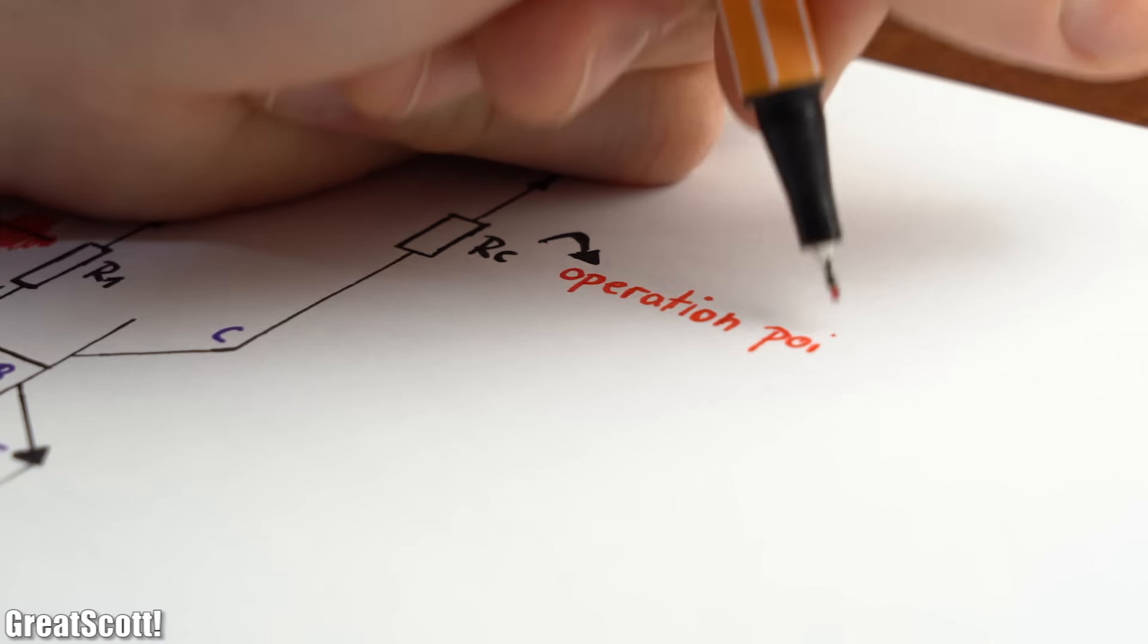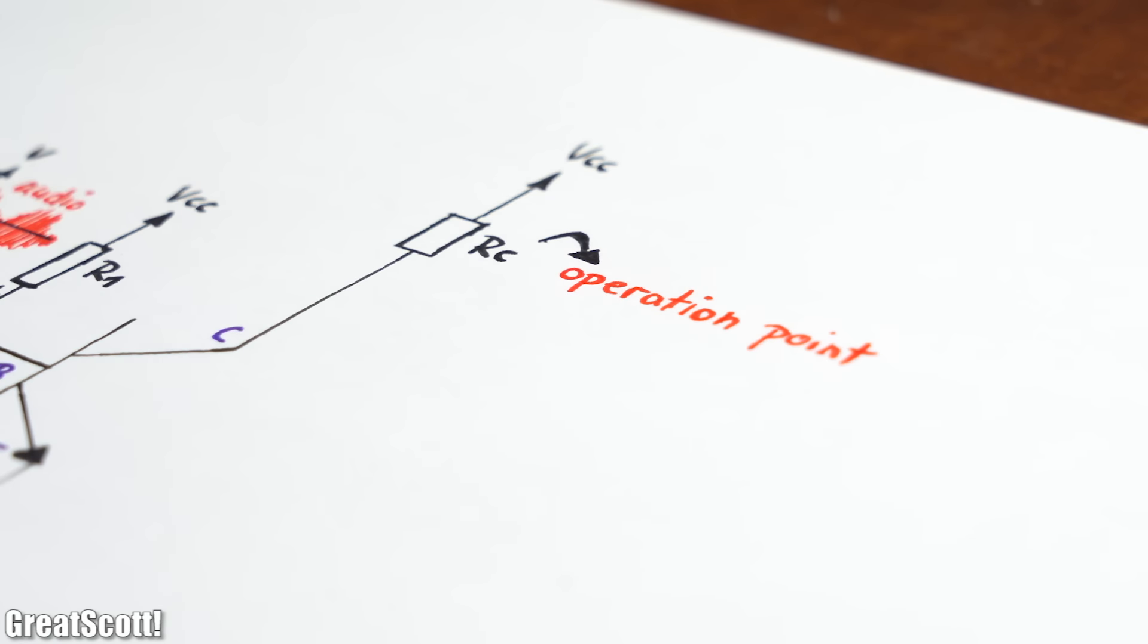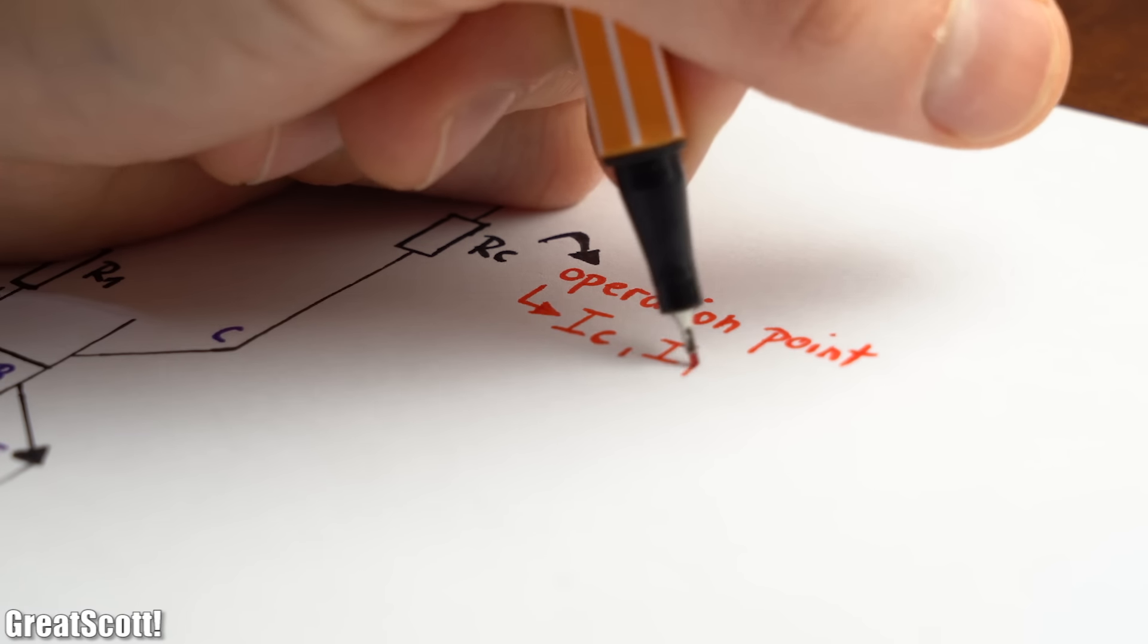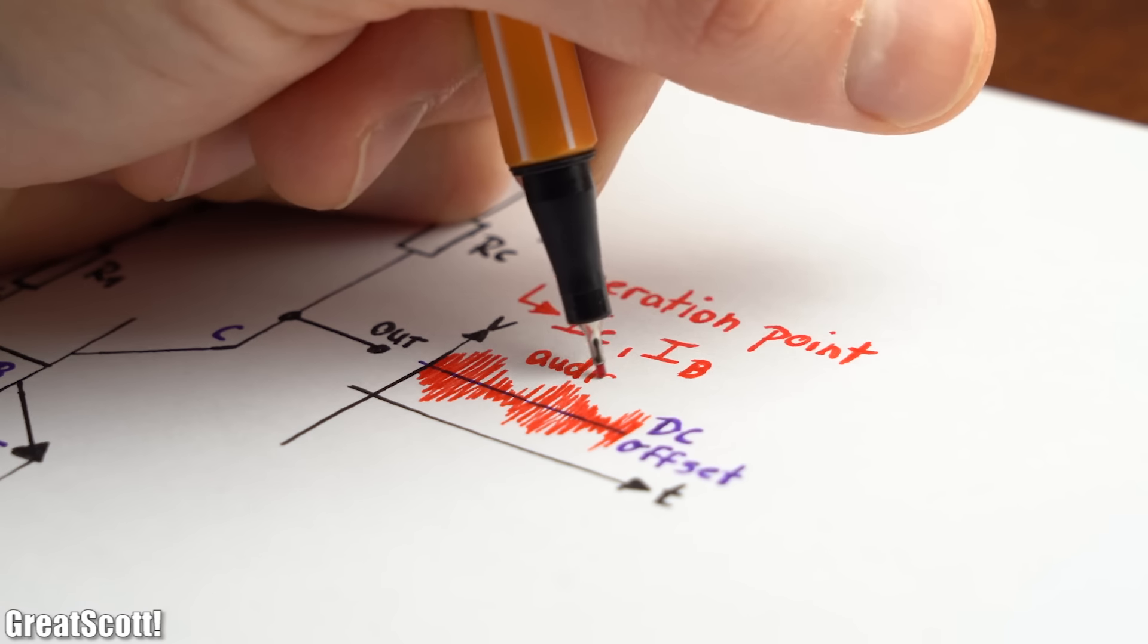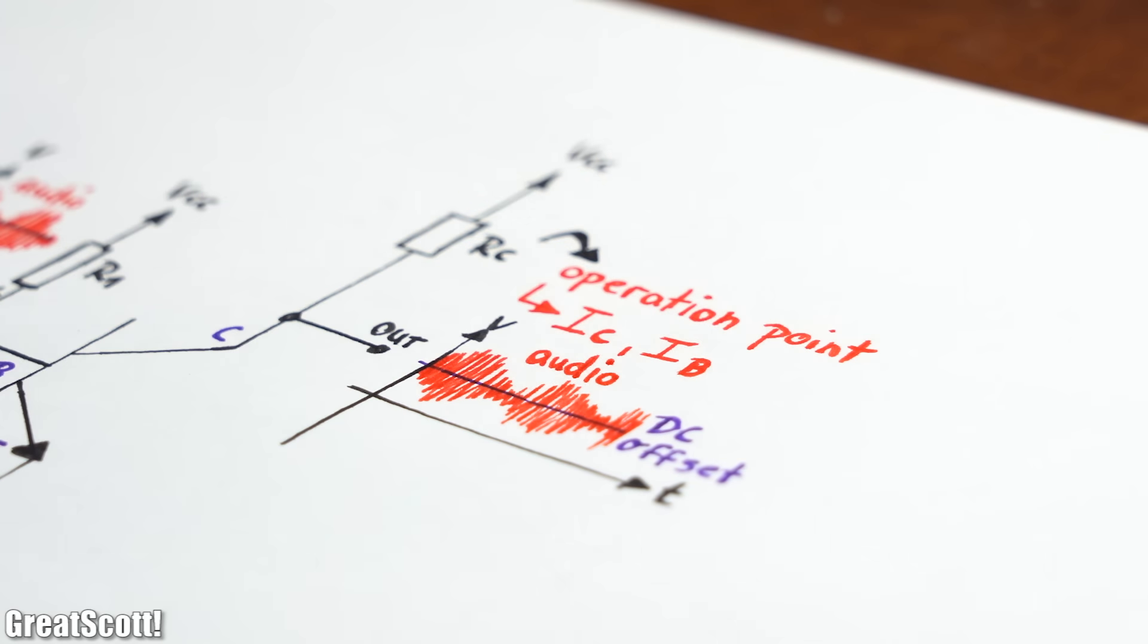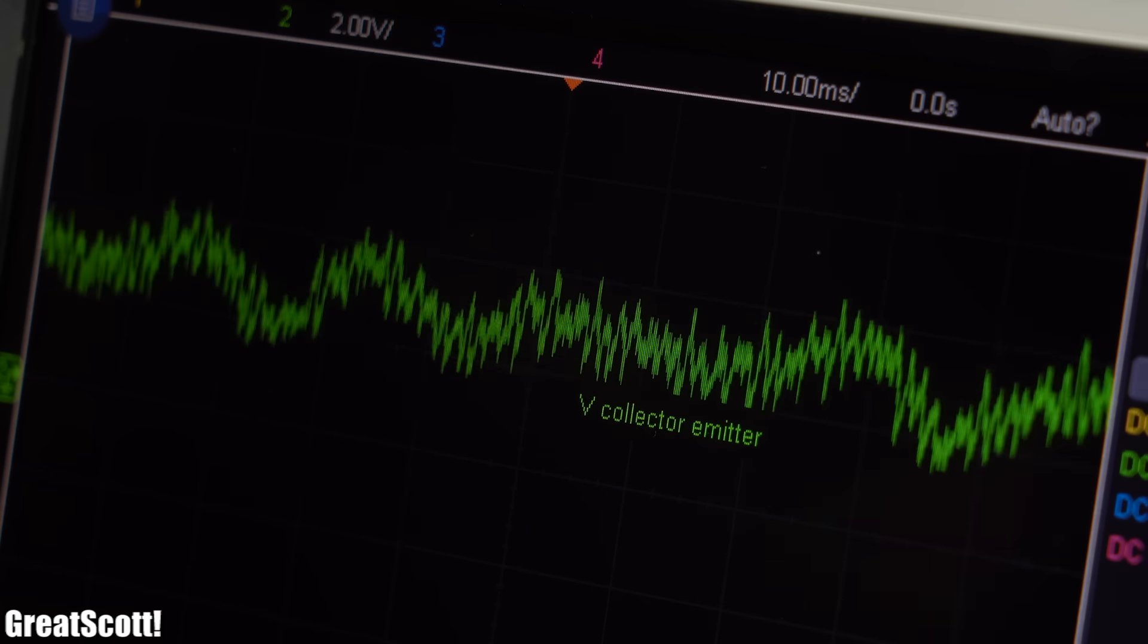Well, they are basically used to set the operation point of the amplifier. They define the collector current, the base current, and the DC offset voltage at which the output voltage will oscillate around, so that it has enough space between the upper and lower voltage limits.